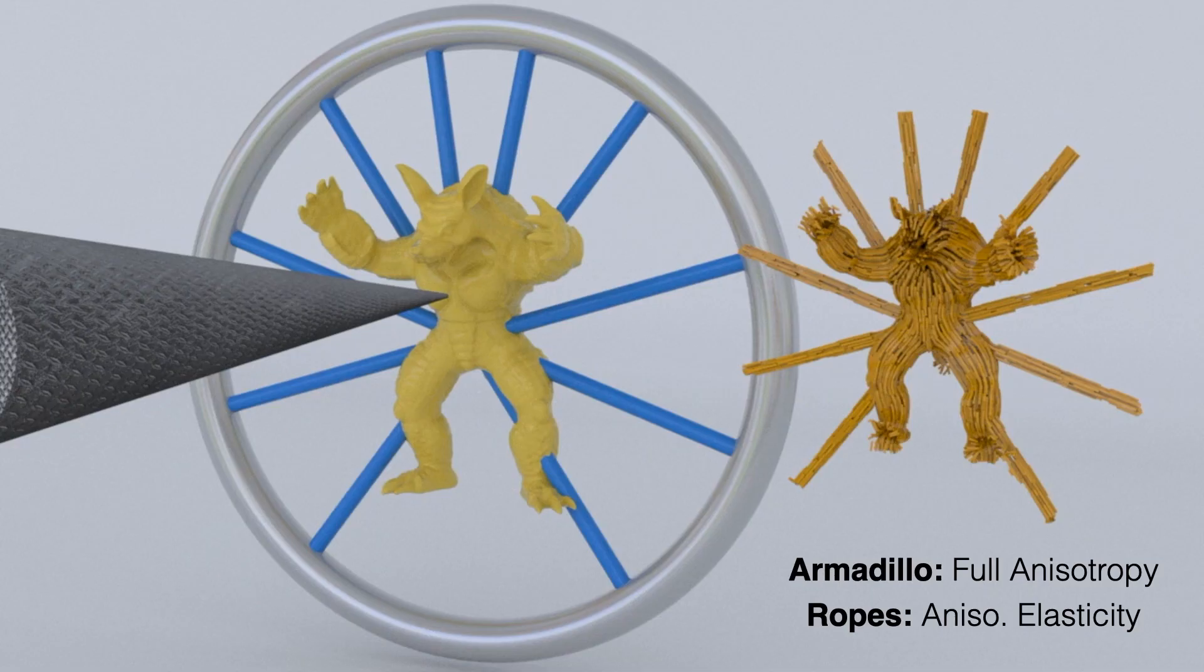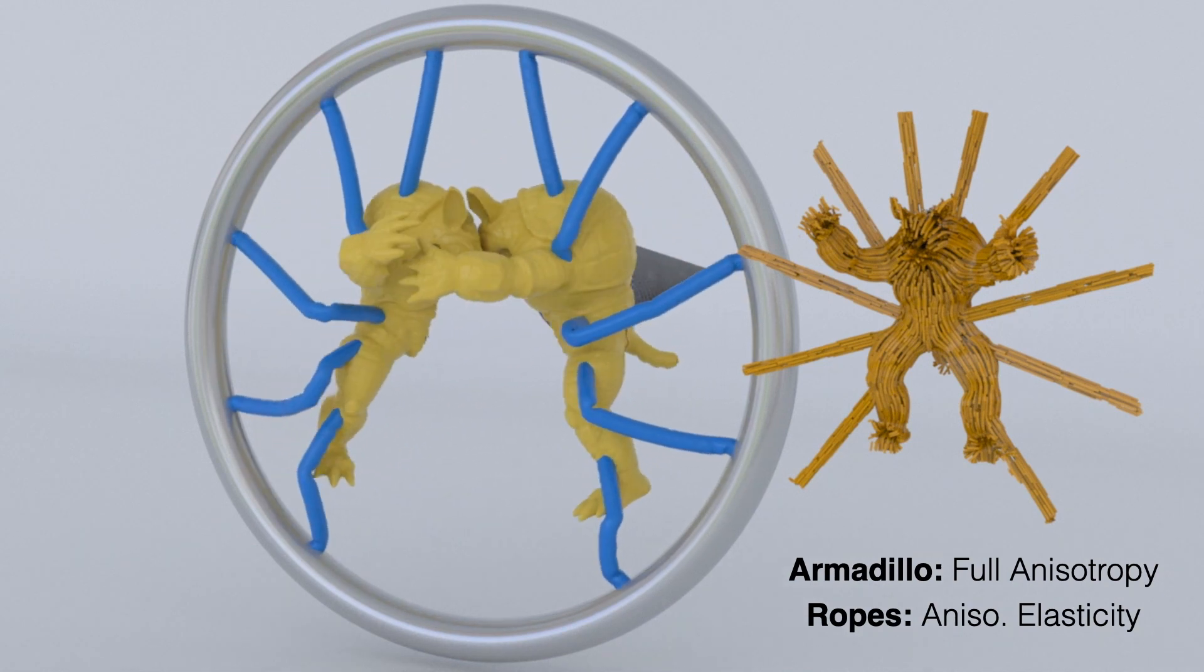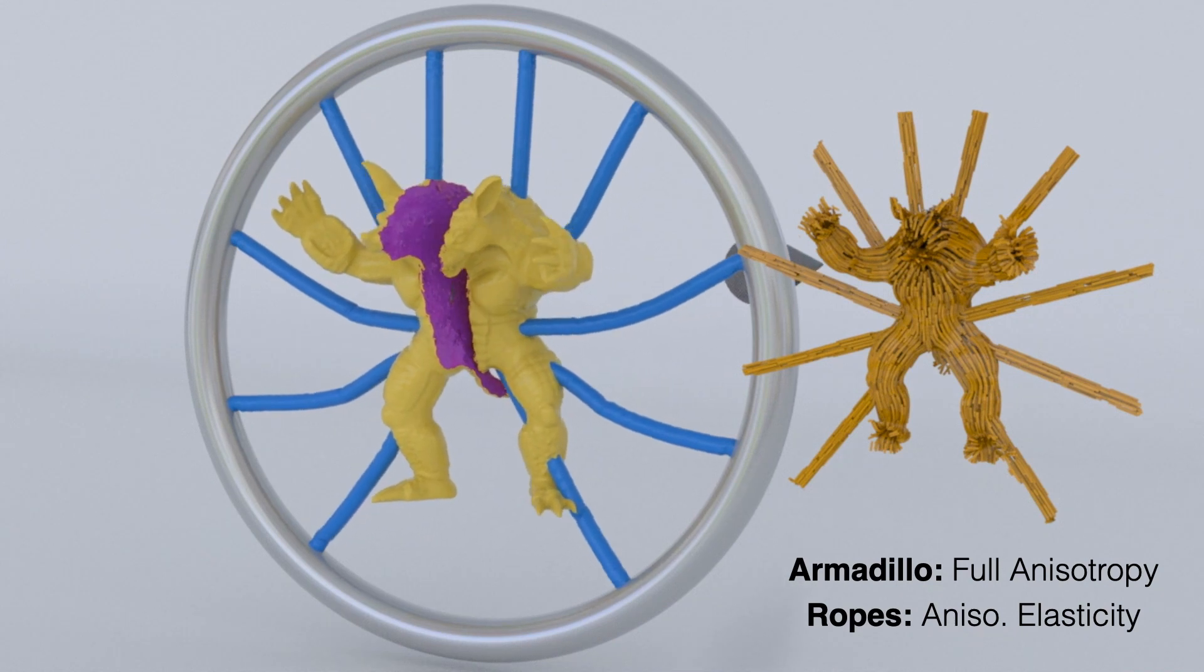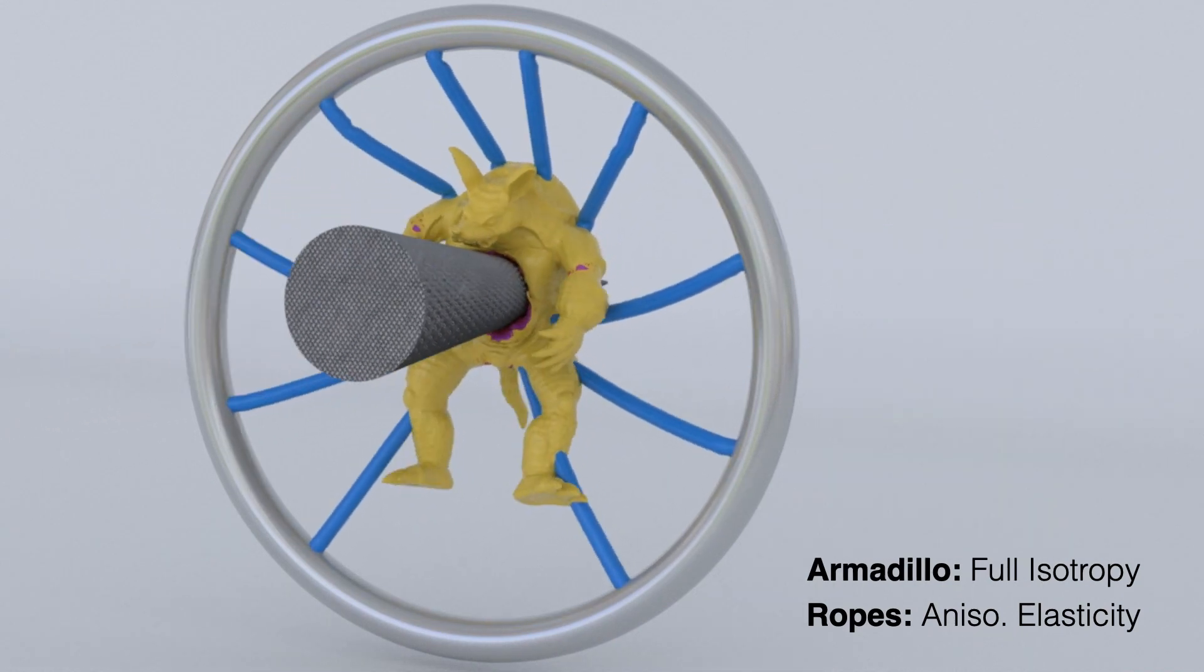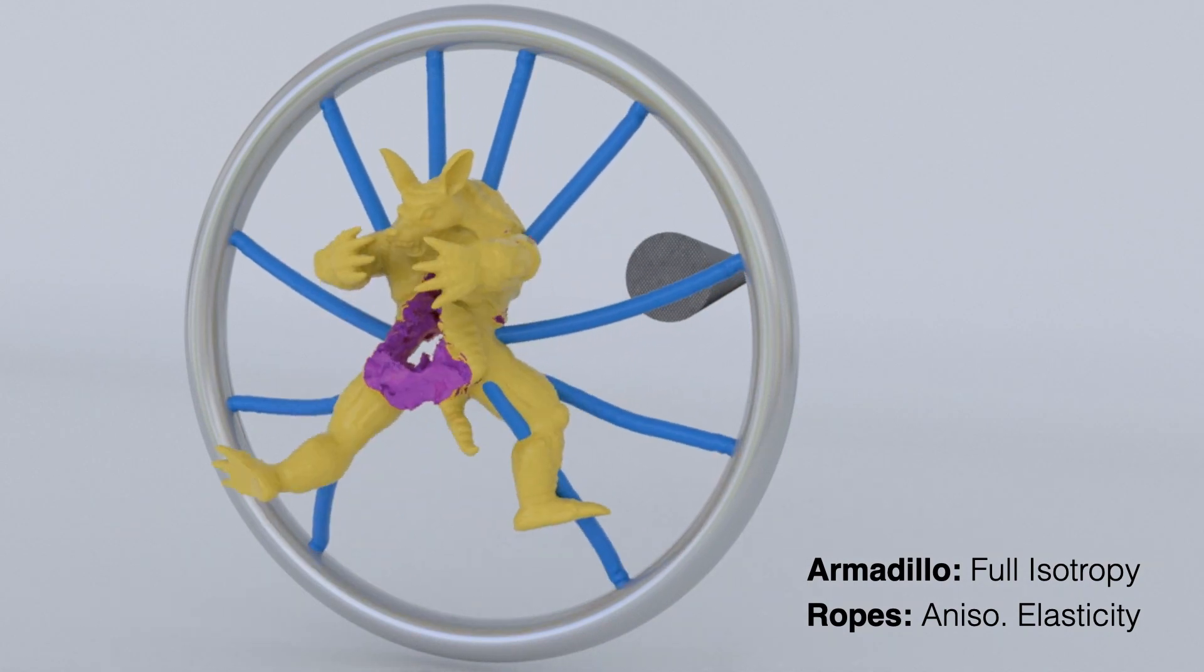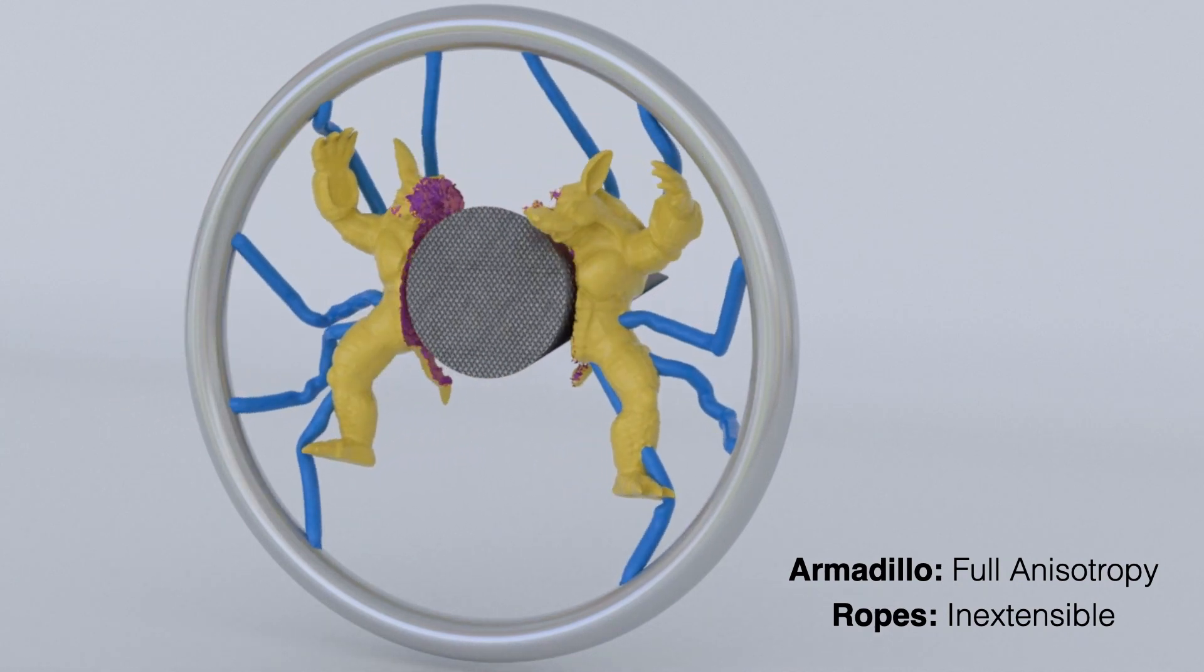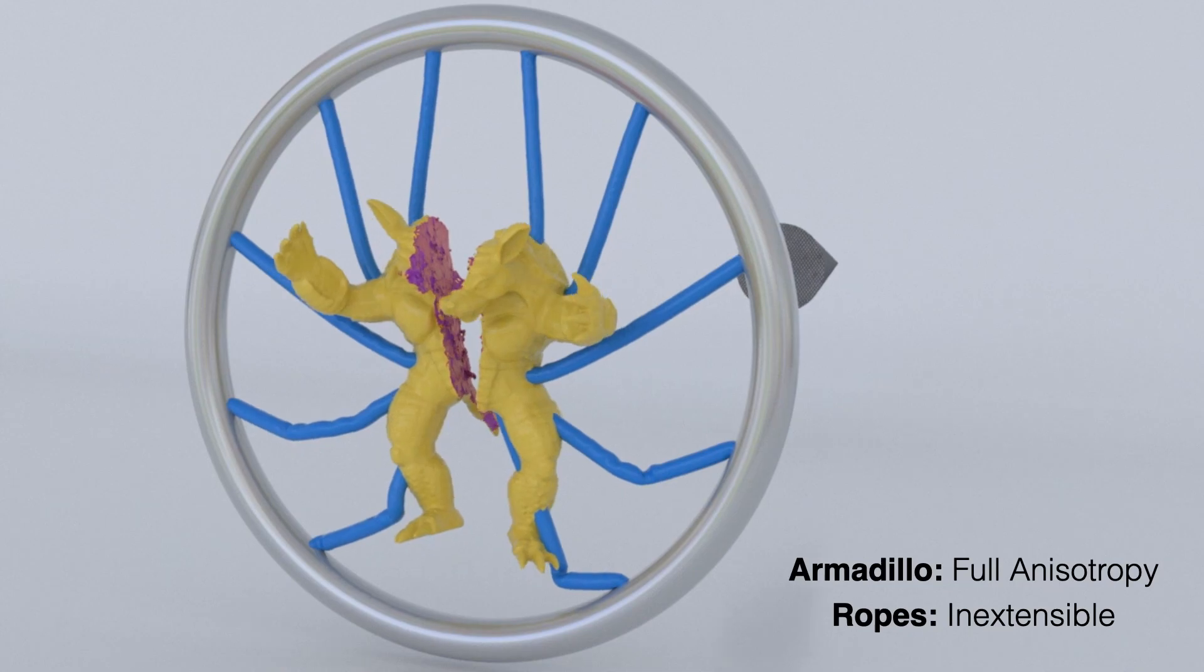Next, we pierce this poor armadillo with a giant lance while it's held in place by elastic ropes. In this first run, the armadillo uses full anisotropic damage, while the ropes use anisotropic elasticity, but no damage. And notice the nice, clean, and slightly gruesome fracture down the middle. This time, the armadillo has isotropic damage, and we see that this causes the lance to simply push through the center with no directed crack at all. Finally, we rerun the anisotropic armadillo, but with inextensible ropes to show the successful pairing of anisotropic damage with inextensibility in the same simulation.